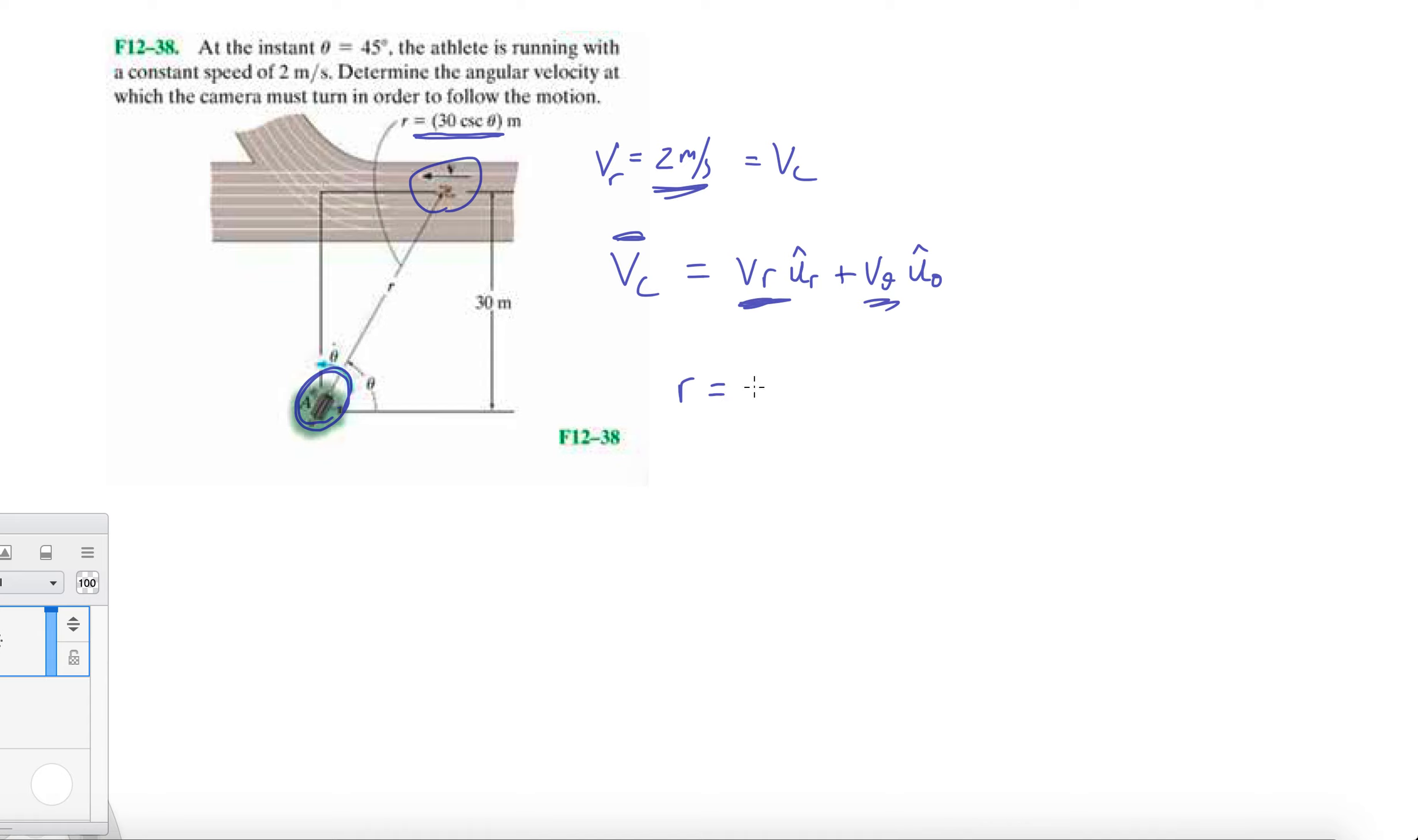They're giving us the position vector of the runner measured from the camera: r equals 30 cosecant theta. The derivative of cosecant theta is minus cosecant theta cotangent theta.